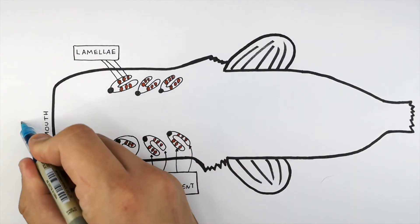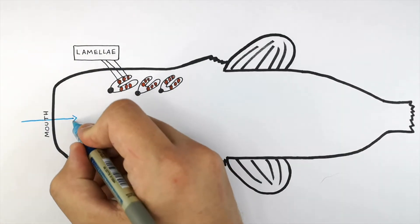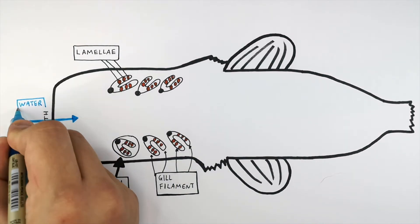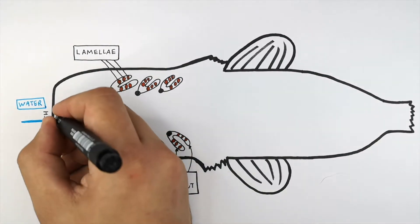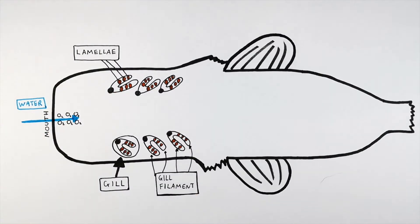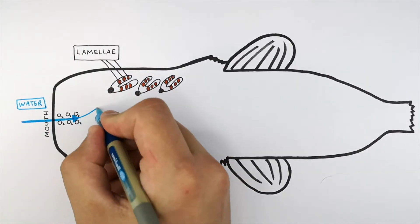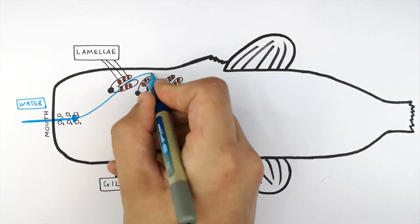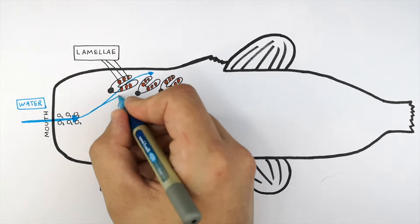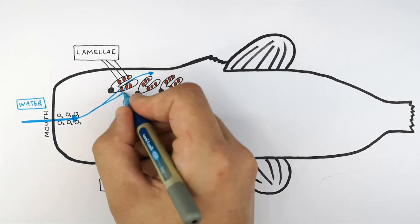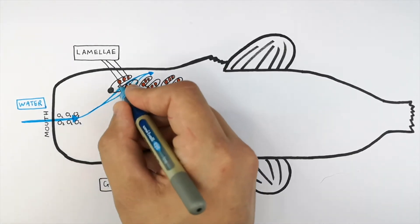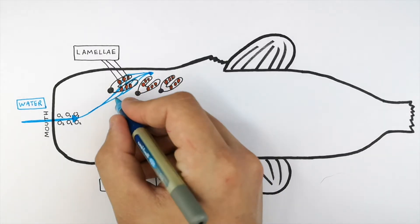Water enters the fish through its mouth. As we can see here, water enters the fish through its mouth and there is oxygen dissolved in the water. This water with oxygen dissolved in it flows over the gills, the gill filaments and the lamellae. And this is where gas exchange happens.